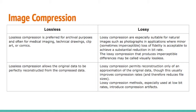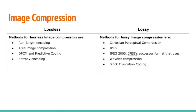Lossy compression is especially suitable for natural images such as photographs in applications where minor loss of fidelity is acceptable, in order to achieve a substantial reduction in bitrate. Lossy compression only permits reconstruction of an approximation of the original data. For lossless compression, the methods include run-length encoding, DPCM and predictive coding, and entropy encoding. For lossy compression, the methods include Cartesian perceptual compression, JPEG, JPEG 2000.